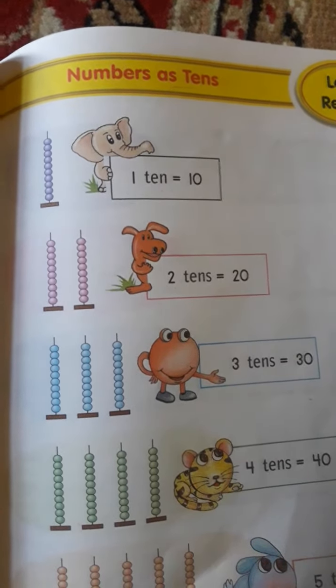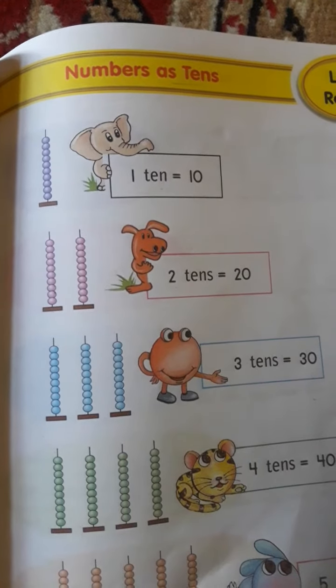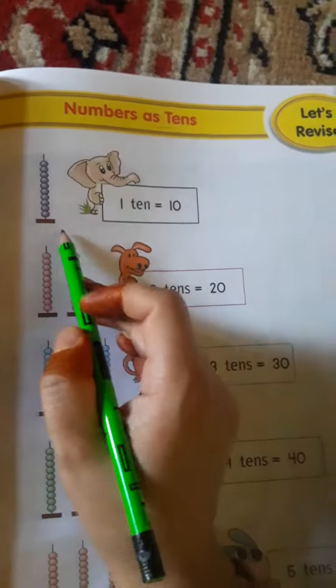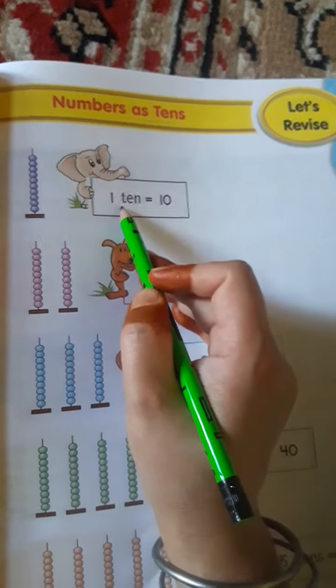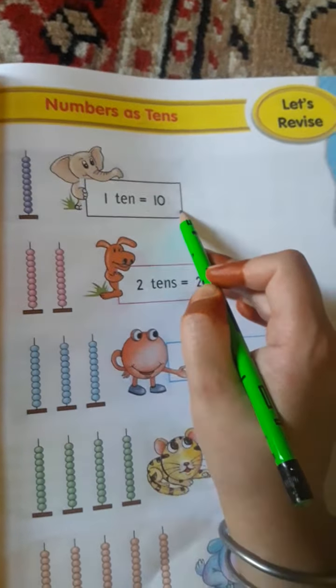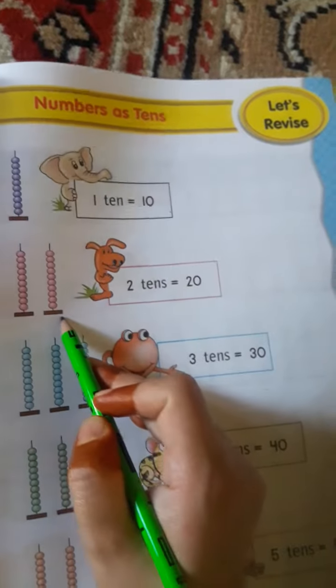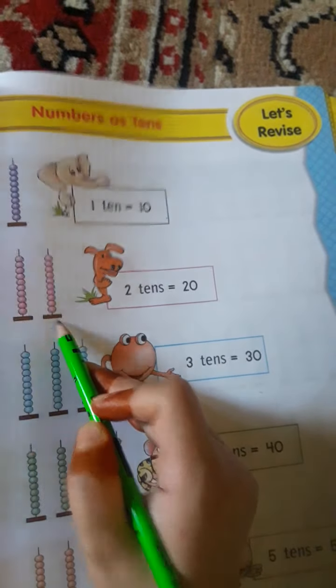Here they have written numbers as tens. In the first example they have made 10 circles, so we will write 1 ten which is equal to 10. Here they have written 20 circles, 2 tens is called 20.